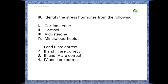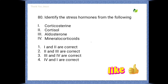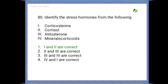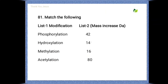Next question: identify the stress hormones from the following. Options are: corticosterone, cortisol, aldosterone, mineralocorticoids. The answer is the first one — that means corticosterone and cortisol are the stress hormones.